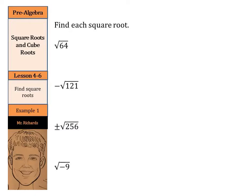Just like division is the opposite of multiplication and subtraction is the opposite of addition, taking the square root is the opposite of squaring a number. So when we look to find the solution to the square root of 64, we need to ask ourselves what number times itself is 64. It's not 1 times 1 or 2 times 2, but eventually 8 times 8 is 64, so our answer to the square root of 64 is 8.